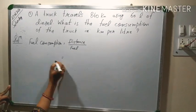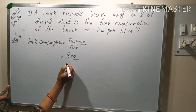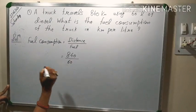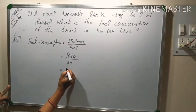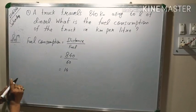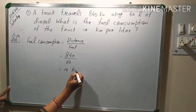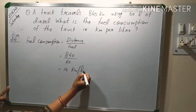So how much distance is traveled? 840. We will use this 60 litre. When we solve, we get 14, unit will be km per litre.